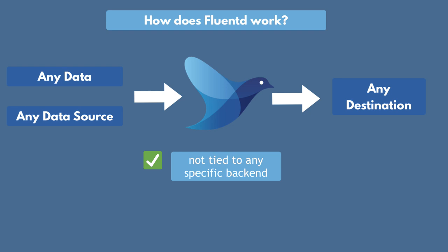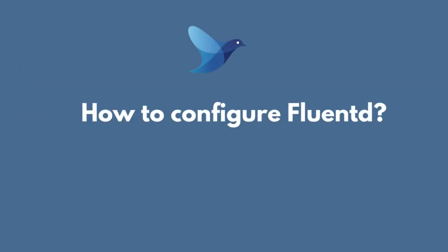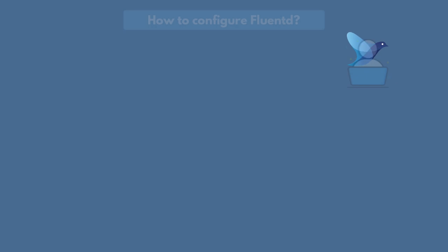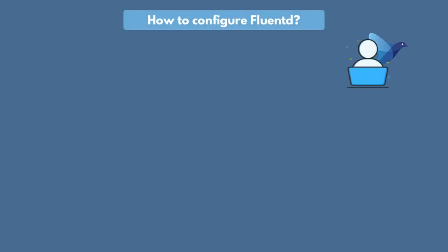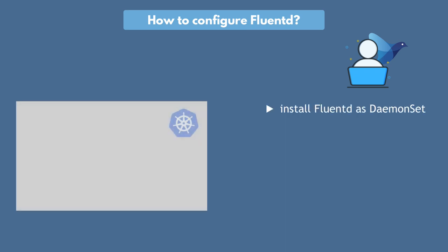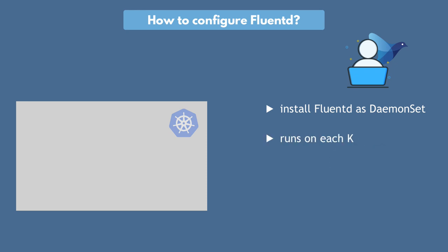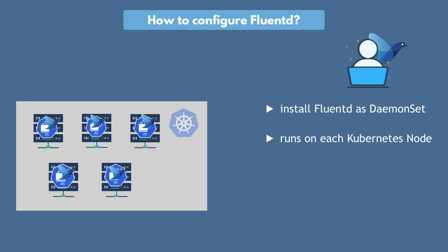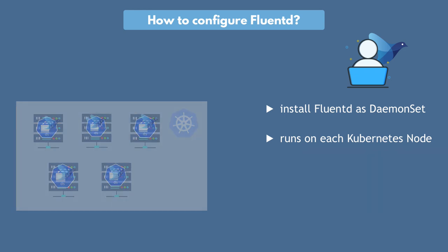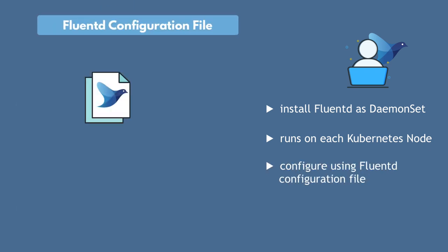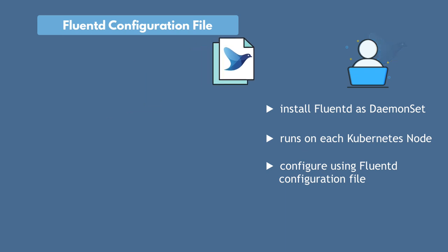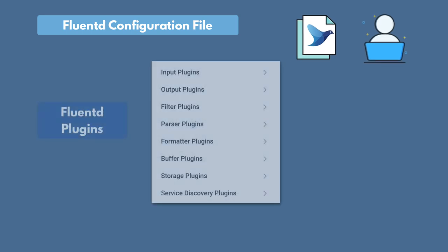You have a wide choice of destination targets without vendor lock-in when using Fluentd. Now, what do you as a Fluentd user need to configure and how can you actually use Fluentd? First, you must install Fluentd in Kubernetes as a daemon set — a component that runs on each Kubernetes node. So if you have five nodes, they will all have a Fluentd pod running on them. You can configure Fluentd using a Fluentd configuration file. Fluentd configuration may be a bit complex to get started with, but it's very powerful in terms of processing and reformatting your data, and for that you will use Fluentd plugins.